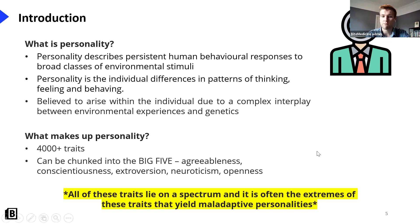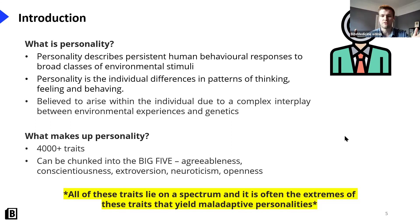You can break personality down into the Big Five: how agreeable you are, how hardworking you are, how extroverted or introverted you are, how neurotic you can be, and your openness in general. All of these traits lie on a spectrum — for example, completely introverted to completely extroverted — and most people are in the middle, a normal distribution. It's the extremes of these traits that tend to yield maladaptive personalities, and that's what we'll be talking about today.